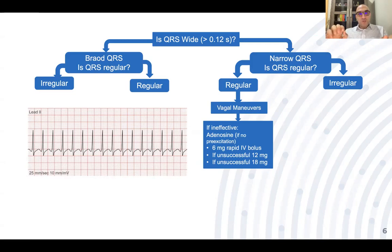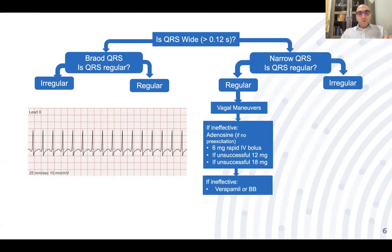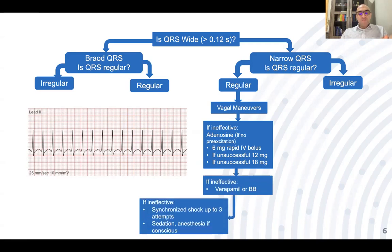Inform the patient that adenosine will cause a decrease in heart rate and they might feel like their heart has stopped, because adenosine blocks the AV node. The patient will feel tightness for just a few seconds, after which it will resolve. If three doses of adenosine are not effective, consider giving verapamil or beta blockers. If still not effective, consider synchronized cardioversion up to three attempts, and consult expert help.